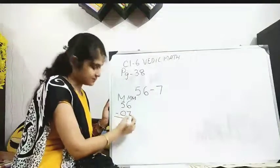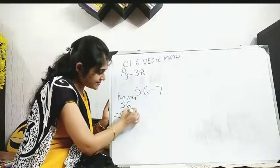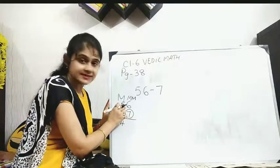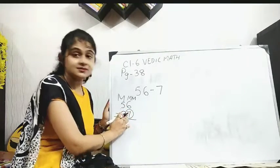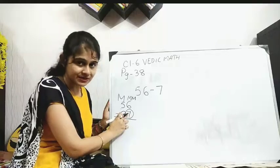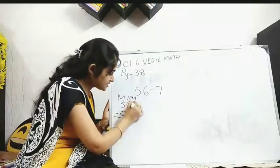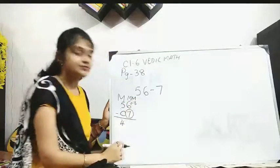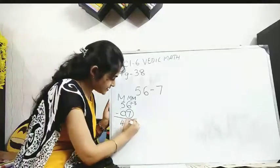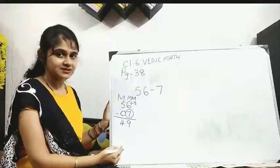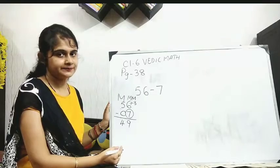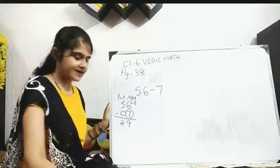Done? Now the point comes. See, this 7 is greater than 6. What is 7's complement? It's 3, right? So 6 plus 3, you will write here 9. Just check my answer is correct or not. It's 49. Clear? Next one.